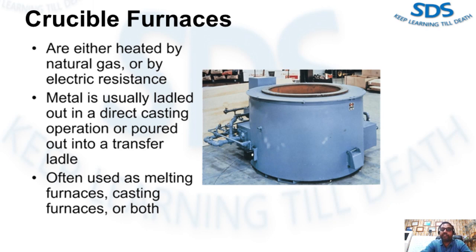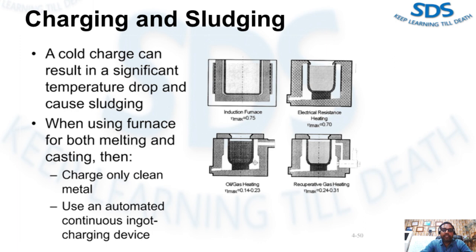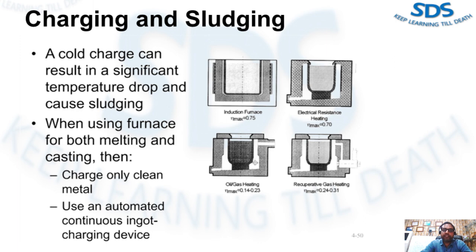When used as a combination melting and casting furnace, it is important to utilize the best crucible material and stabilize the melt and casting temperatures. When the temperature of the metal to be cast becomes too low, sludging occurs and causes serious casting problems. A good rule of thumb is to never charge a cold ingot directly into a casting furnace — the cold charge, especially in a small pot furnace, can result in a significant temperature drop and cause sludging. If a single furnace must be used for both melting and casting, it is strongly advisable to charge only clean metal and use an automated continuous ingot charging device, which lowers ingot into the melt at only the rate sufficient to maintain a nearly constant temperature and melt level.